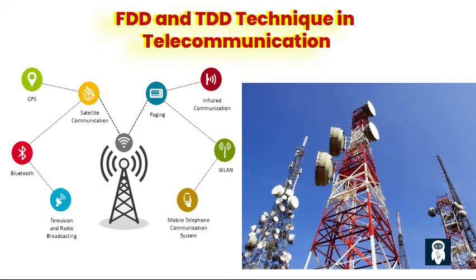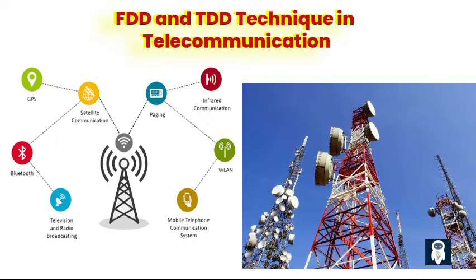Ever wondered how your phone manages to handle both sending and receiving messages simultaneously? That's where frequency division duplex (FDD) and time division duplex (TDD) come into play. These technologies are like the dynamic duo of telecommunication, making sure your calls and data get to where they need to go without any mix-ups. The most frequent form of communication is bi-directional communication, which allows simultaneous transmitting and receiving. A system capable of doing this is called full duplex. One can also achieve full duplex capability if sending and receiving do not occur simultaneously, but switching between both phases is done so fast that it is not noticed by the user — i.e., both directions can be used quasi-simultaneously.